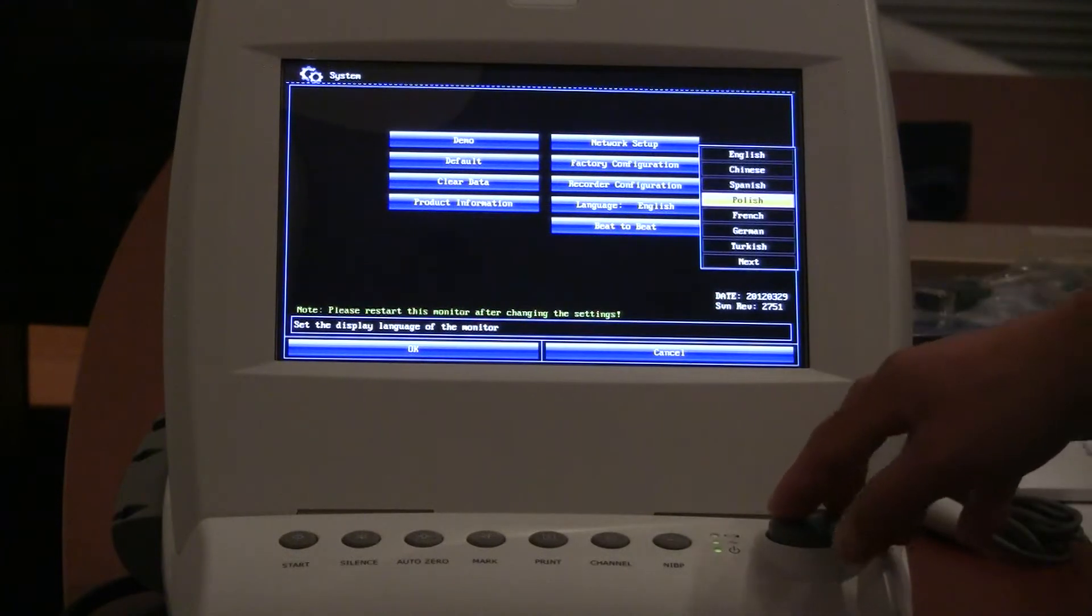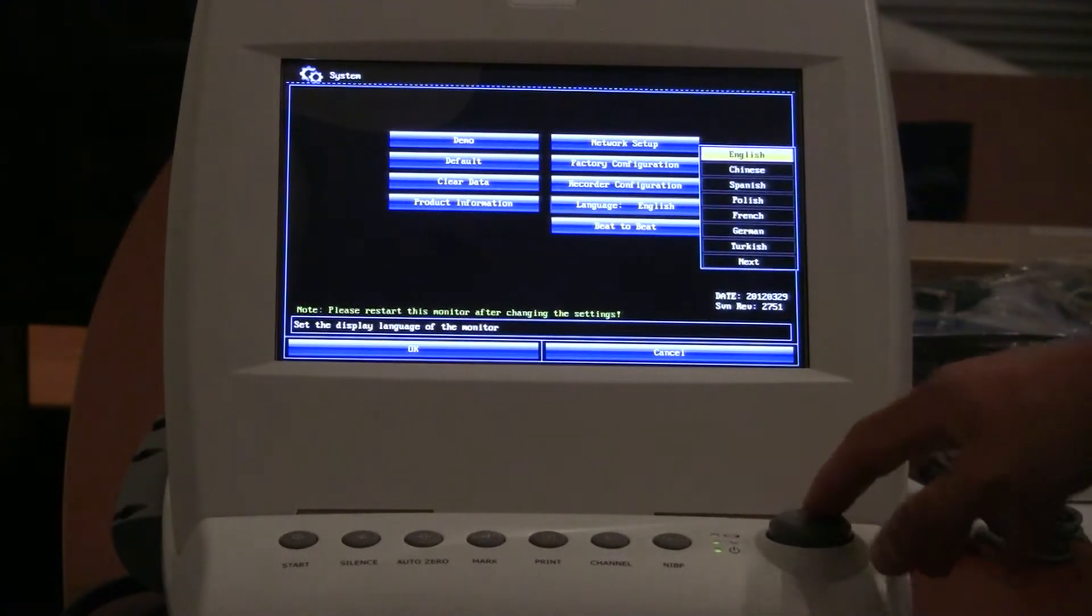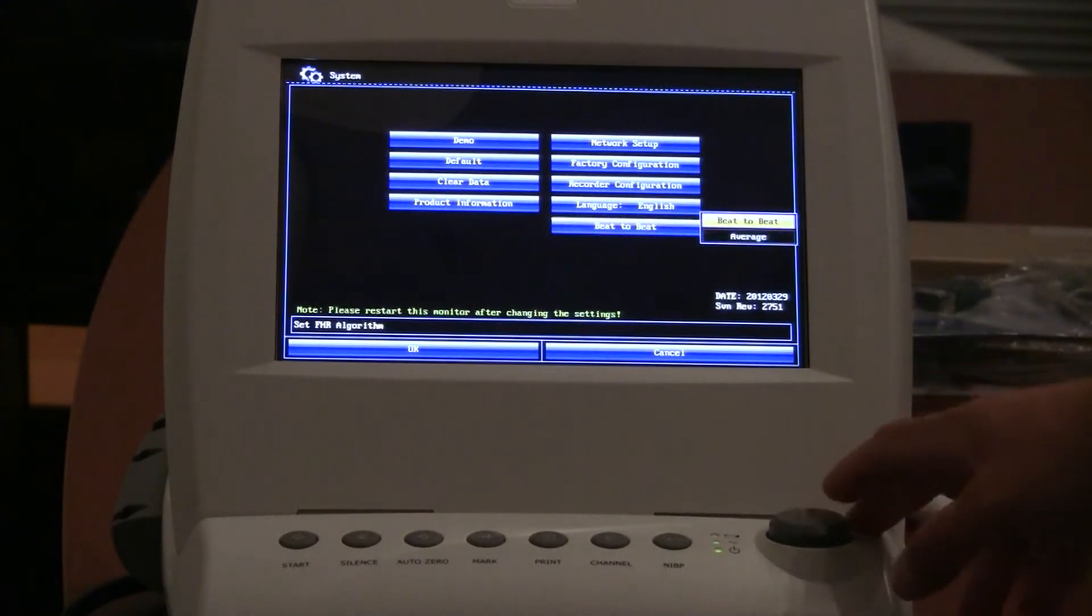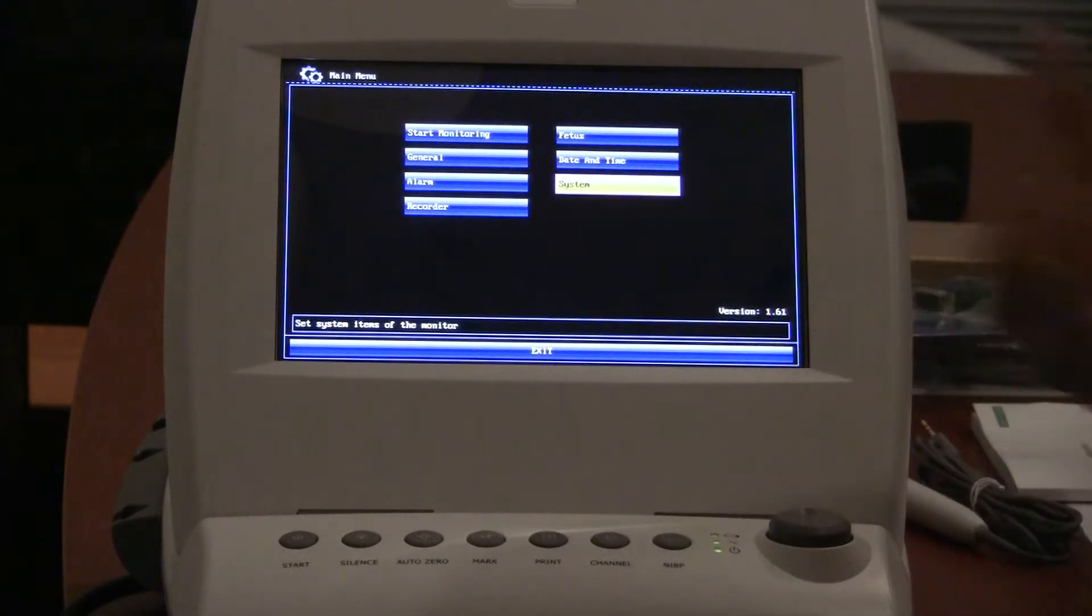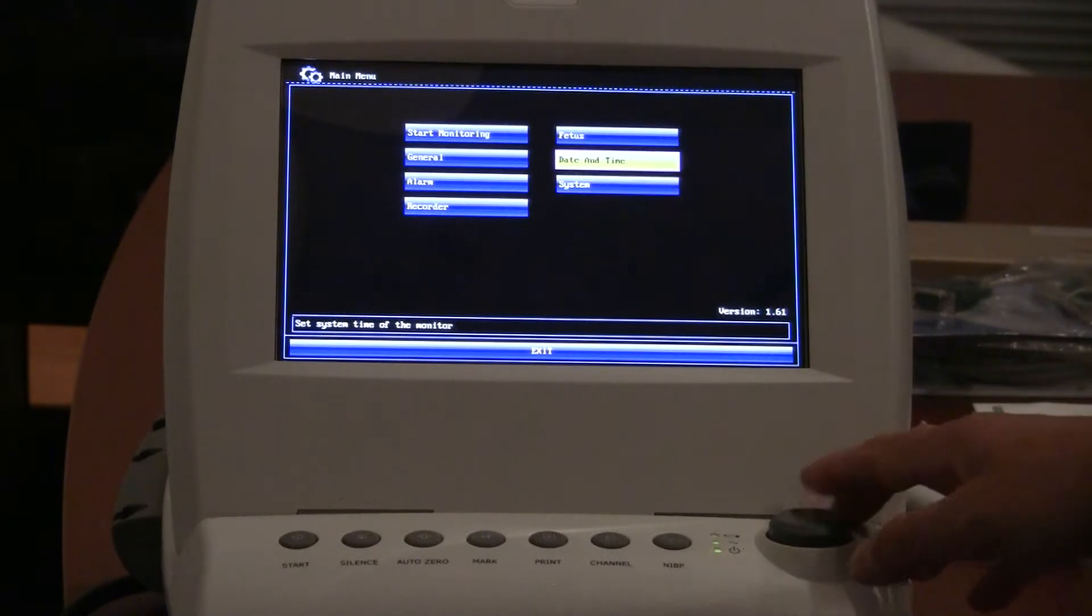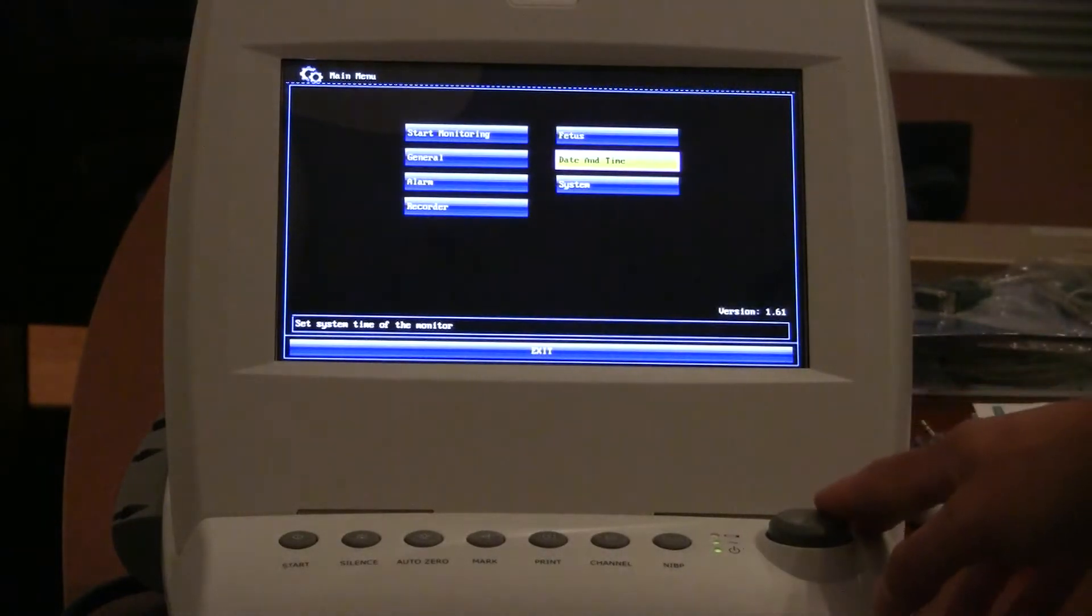Language obviously comes built in with Chinese, Spanish, Polish, French, German, Turkish, a variety of other ones. We'll just leave it in English. Beat to beat or average settings would be here and we'll okay out of this screen. So again, that was the system setup. It's kind of where you want to start, I think, with this monitor to get it configured the way that you like. Date and time, pretty self-explanatory. You can see here this has already been set. We'll just hit okay and get out of that screen.